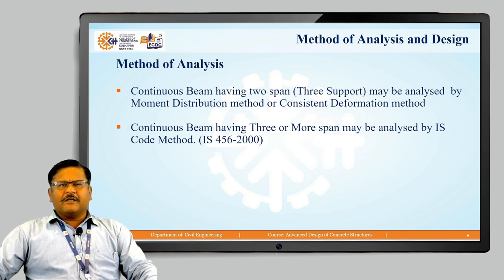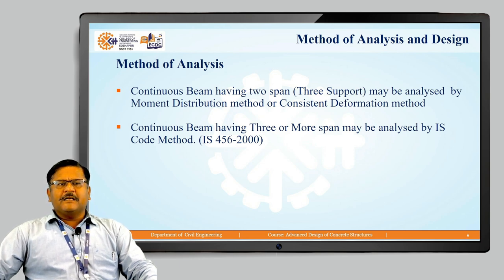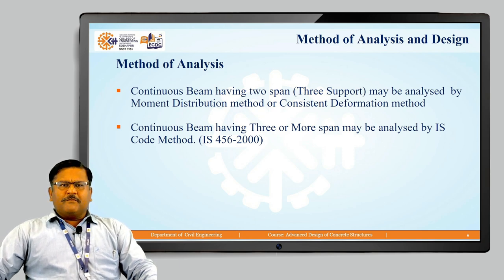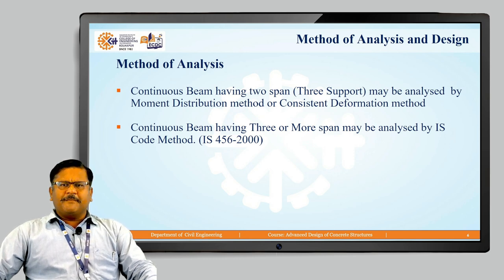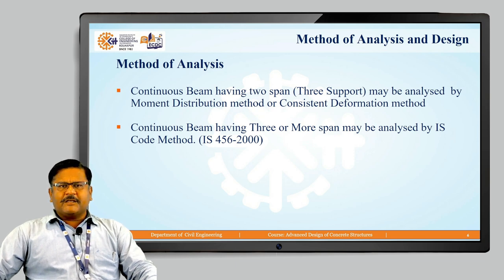Regarding the method of analysis of a continuous beam: there are two types. First, a beam having only two spans — that is, supported by three supports — is analyzed by the moment distribution method or the compatibility deformation method. But if the beam has three or more spans, it may be analyzed by the IS code method. IS 456-2000 specifies the method of analysis for continuous beams extending over three or more spans.